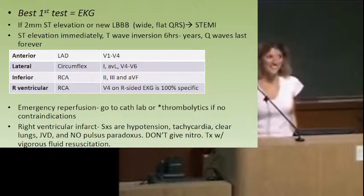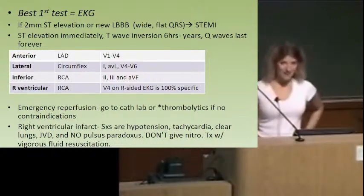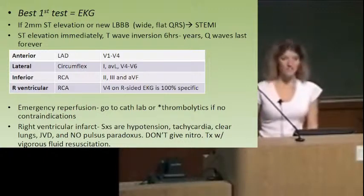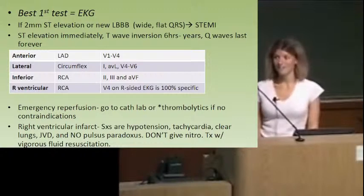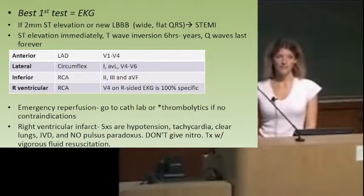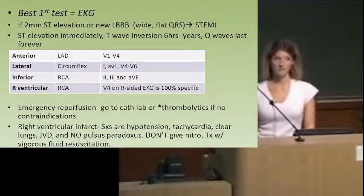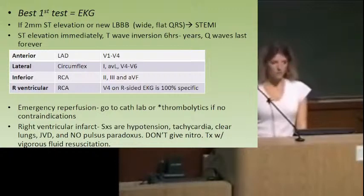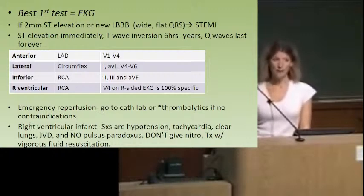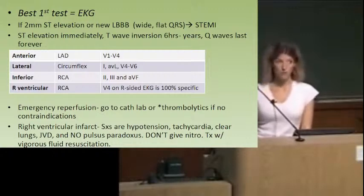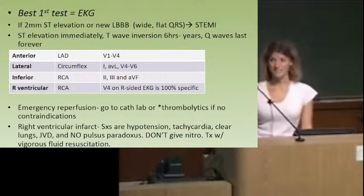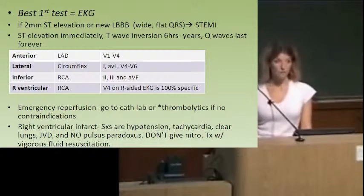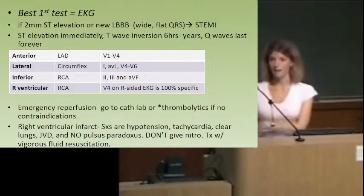Contraindications for thrombolytic therapy might also show up on your exam. If you're bleeding, thrombolytics is not a good choice. If they're anticoagulated, be more cautious. Ever a hemorrhagic stroke — if they had a hemorrhagic stroke in the past, you can't give thrombolytics. If they had a recent ischemic stroke, you can't give thrombolytics. And then recent closed head trauma — if they fell off a horse and then had a heart attack, no thrombolytics.